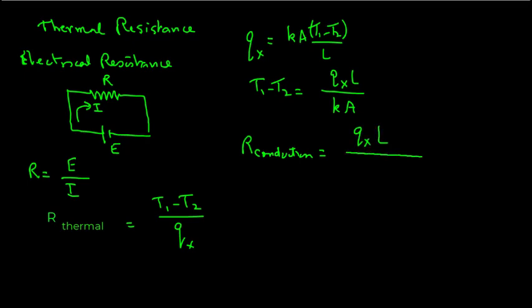And if we go ahead now and substitute for T1 minus T2 in our expression for the resistance, for the thermal resistance, we will have QXL divided by KA and then will be QX left over from the other expression.